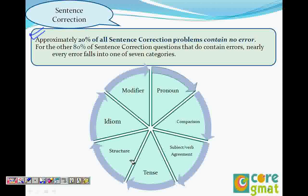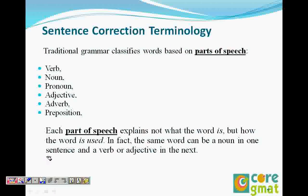So if you understand all these correctly, the possibility of getting those 16 questions right is very high. We'll start with the modifier because modifier error is the easiest error to locate. Before we do the modifiers, let's understand some terminology, because throughout the session we'll refer to the verb, the noun, the subject — so you need to know what we're referring to. We need to understand what is a verb, what is a noun — these are commonly seen words in grammar.